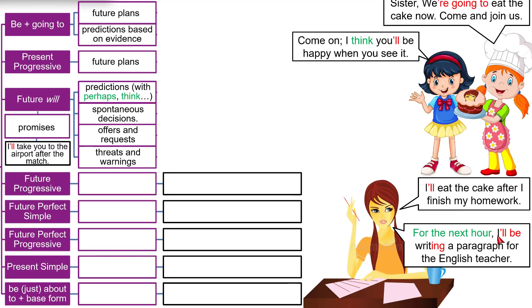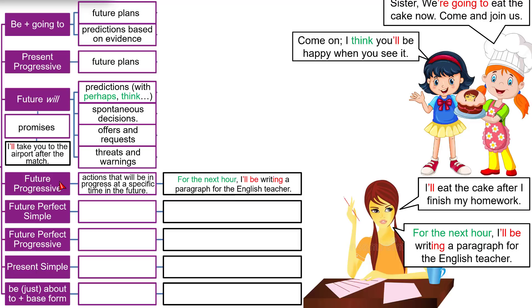"For the next hour, I'll be writing a paragraph for the English teacher." This will happen in the future and will continue happening — I will keep writing for the next hour. This is the future progressive: actions that will continue happening at a specific time. The time must be mentioned. Note: use 'will be' — not 'am/is/are' — and add '-ing' to the verb. For example: "I'll be eating my food in the next hour" or "I'll be watching a YouTube video tomorrow morning."